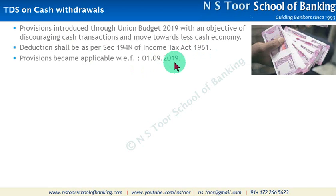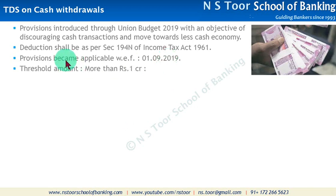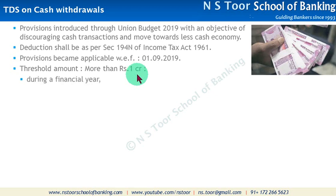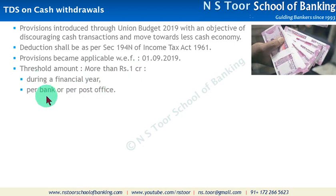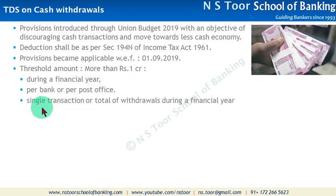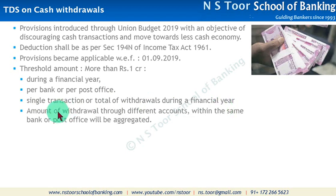These provisions have become applicable from 1st September 2019. In the financial year 2019, यह one crore से ज्यादा का total cash withdrawal है - this is during a financial year, and it is per bank or per post office. It can be a single transaction or it can be total of withdrawals during a financial year. Amount of withdrawals through different accounts within same bank or post office will be aggregated.